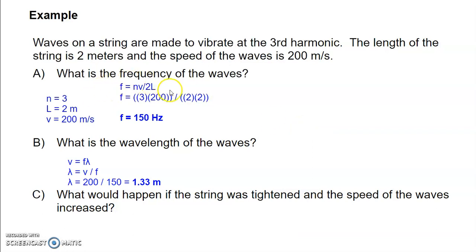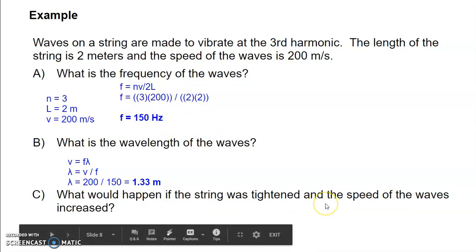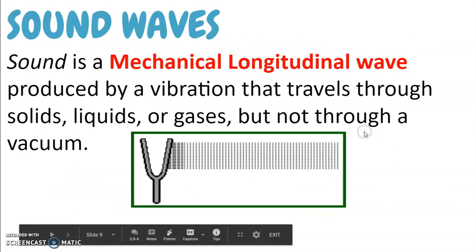If the string is tightened and the speed increases — say from 200 to 400 m/s — then f = (3 × 400) / 4 = 1200 / 4 = 300 Hz. You can test this yourself: make waves on a loose string, then pull it tight and you can see they move faster. So when the string is tightened and wave speed increases, the frequency goes up.